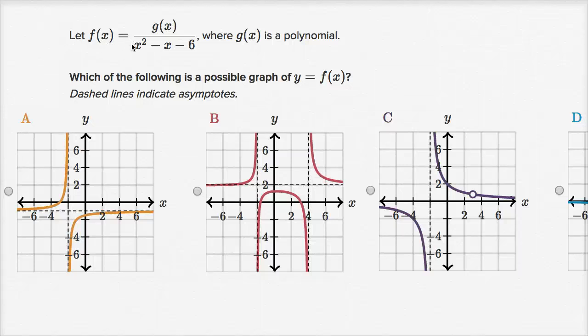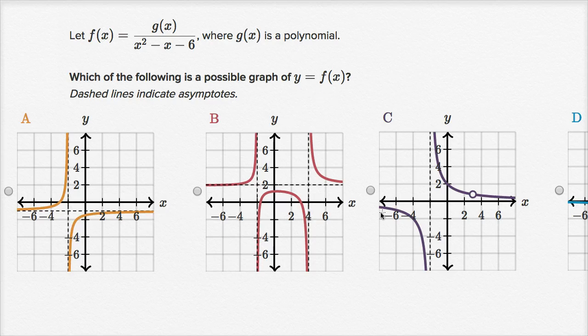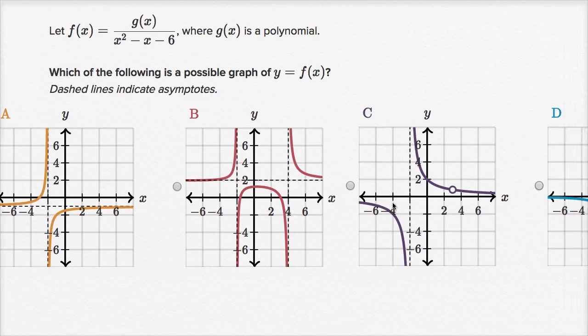We're told: let f of x equal g of x over x squared minus x minus six, where g of x is a polynomial. Which of the following is a possible graph of y equals f of x? They give us four choices.